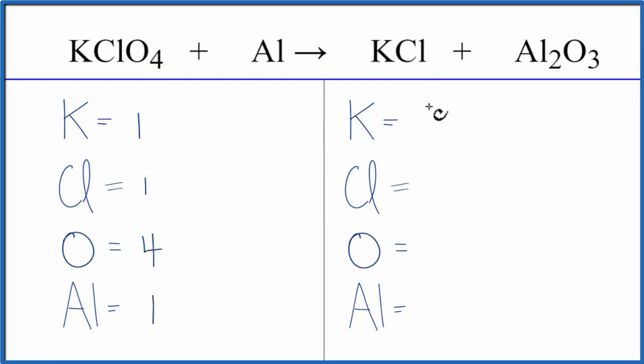On the product side of the equation, we have one potassium, one chlorine, three oxygens, and then two aluminum atoms.